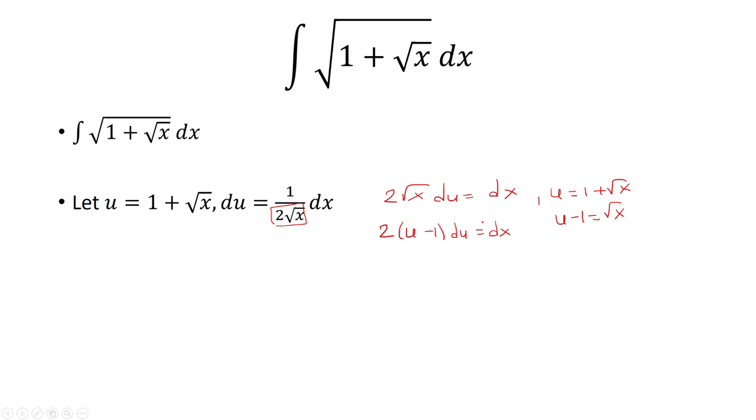That's going to go in the new integral. Whatever was inside here became u, so we have square root of u. And then dx was 2 times u minus 1.